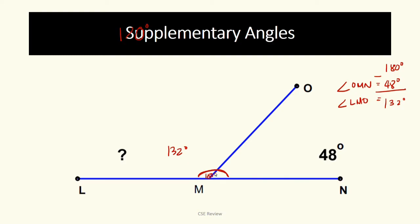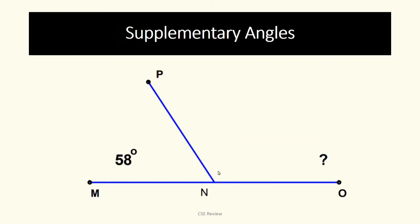Now it's your turn. Let's pause. Angle MNP is 58 degrees. The missing angle is PNO. To find it, subtract 58 degrees from 180 degrees. The answer is 122 degrees. Again, it's just subtraction. This is 122 degrees. I hope you got that right. Again, complementary is 90 degrees, supplementary is 180 degrees.